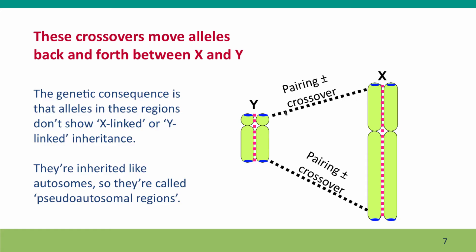The genetic consequence of this is that alleles in these regions don't show X-linked inheritance or Y-linked inheritance. Instead, because of the crossovers, alleles that were present on the X chromosome at the tip may wind up in the next generation on the Y chromosome, and vice versa. That means that these sequences at the tips — these homologous sequences — are inherited just like autosomes. And because of that, the regions are called the pseudo-autosomal regions of the X and Y chromosome.